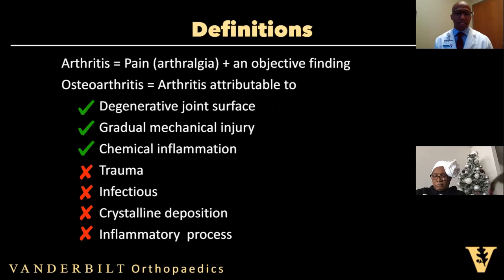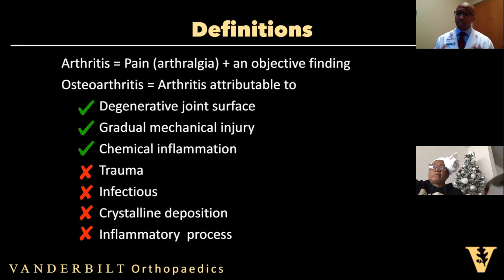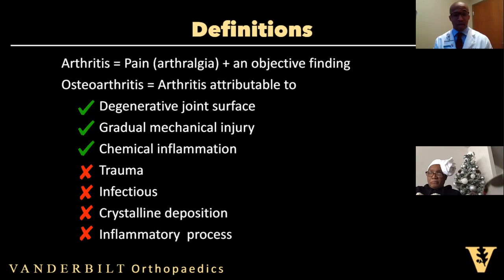First, when we mention arthritis, it's helpful to remember that arthritis is just the presence of pain within a joint — arthralgia — plus an objective finding. That objective finding may be changes in x-ray findings, the presence of an effusion within a joint, or the redness or heat emanating from a joint — the rubor and calor that we've all learned about in early medical training. But osteoarthritis, unlike other types of arthritis, is specifically arthritis attributable to degenerative changes within the joint surface.